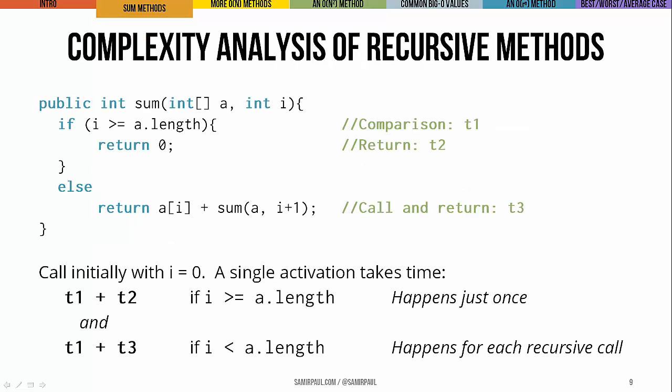We can do this kind of complexity analysis for recursive methods too. Here's a recursive version of the sum method, and it is also O of n. We assign units of time to these operations as well. The comparison — the if statement — takes T1 units of time. If i is greater than or equal to the length, the return statement takes T2 units of time. Otherwise, the other return statement takes T3 units of time for the call and the return.